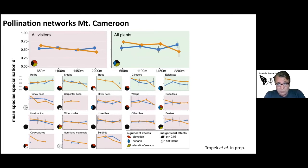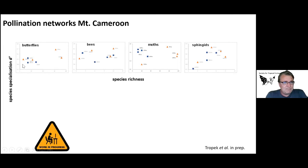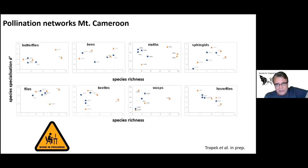Checking individual functional groups, some show the same pattern — specialization decreasing during the dry season and staying more or less stable during the wet season. But some groups behave differently, and I am currently thinking intensely about why this is group-specific. Plotting average species specialization against species richness, for some groups it seems there could be some correlation during the dry season, but unfortunately this is not a general pattern — many other groups show chaotic results and hover flies even show the opposite trend. This requires future analysis.